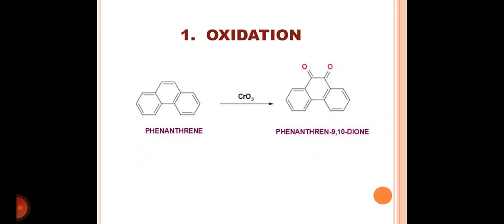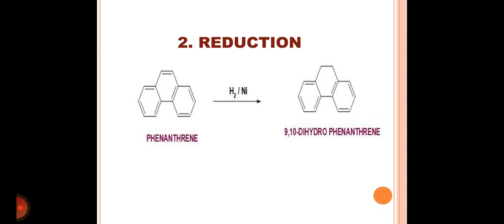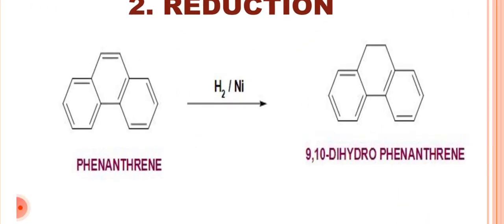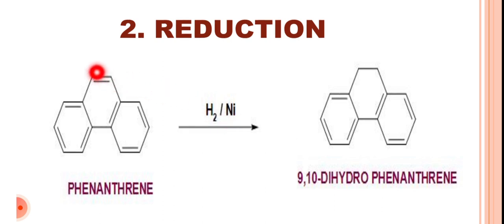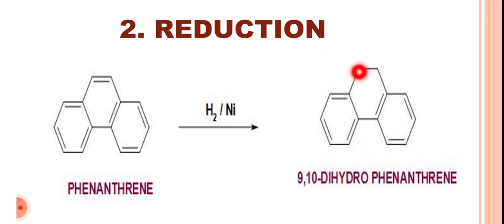The second reaction is the reduction reaction. Phenanthrene on reaction with molecular hydrogen in the presence of a catalyst like nickel undergoes reduction chiefly at positions 9 and 10. Thus by reduction we get the formation of 9,10-dihydrophenanthrene.